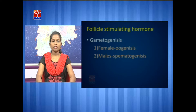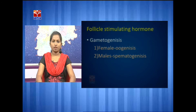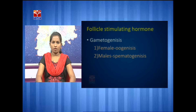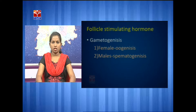The next hormone is follicle stimulating hormone. This hormone stimulates gametogenesis in human beings. In the case of females, it stimulates oogenesis by the development of ovarian follicles and the release of ovum. In the case of males, it stimulates the seminiferous tubules of the testes to produce sperms by the process of spermatogenesis.